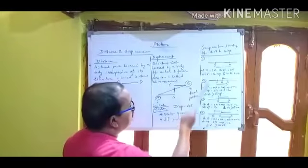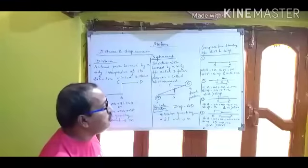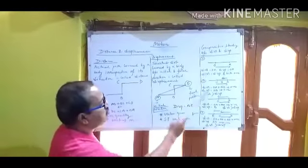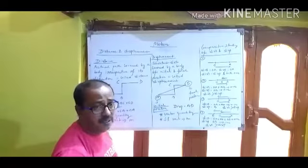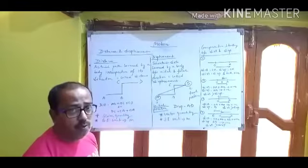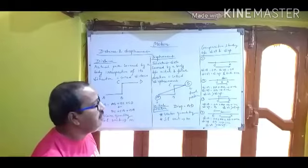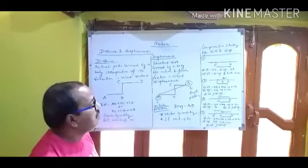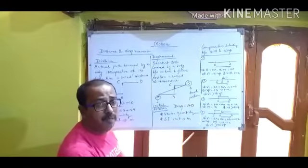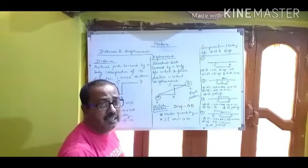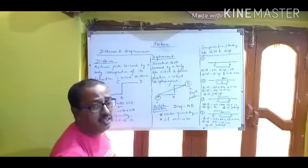From this comparative study we conclude: first, distance cannot be less than displacement — distance is always greater than or equal to displacement. Second, distance is always positive, but displacement may be positive, negative, or zero. That is the comparative study between distance and displacement.